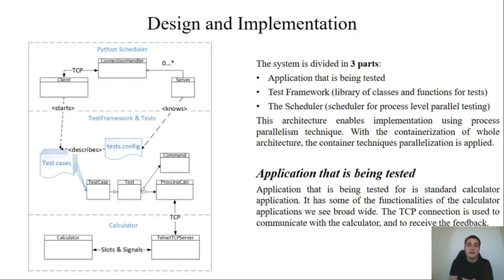Now, let's go to the design and implementation of our proposed system. The system is divided in three parts. We have application that is being tested. That's application calculator from the diagram. We have test framework and we have test scheduler. The architecture of the system is shown in diagram and we will start from the bottom. Application that is being tested is calculator application. TCP connection is used so that the calculator application can be tested through the TCP connection. We send and receive commands to process calculator.